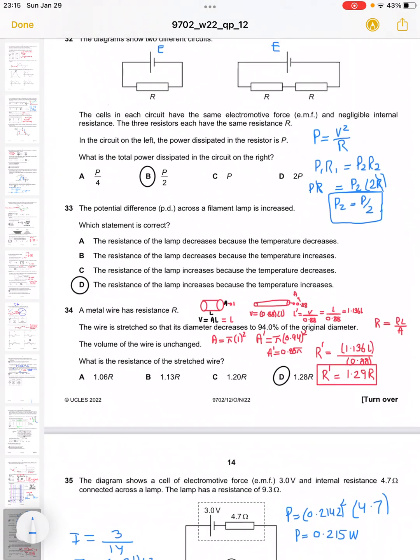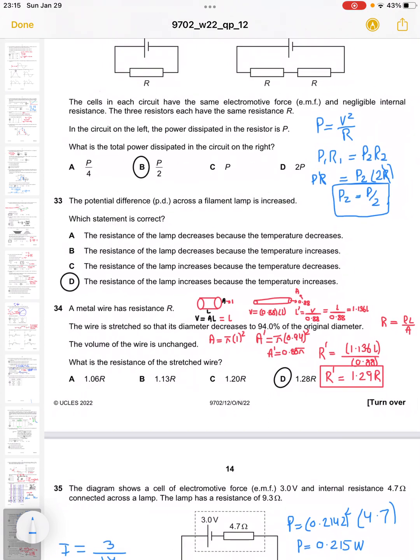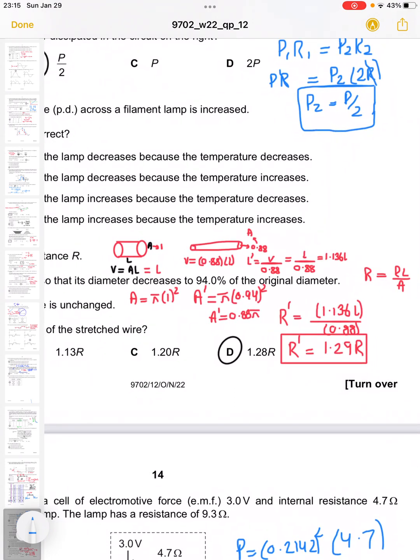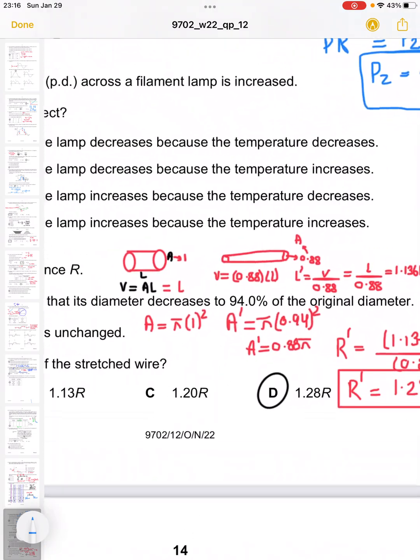Question 34 says that a metal wire has resistance R and its diameter decreases to 94% of the original diameter and the volume is constant. Such questions have been asked repeatedly before. What is the resistance of the stretched wire? We need to evaluate the volumes. For the first wire, volume equals AL.